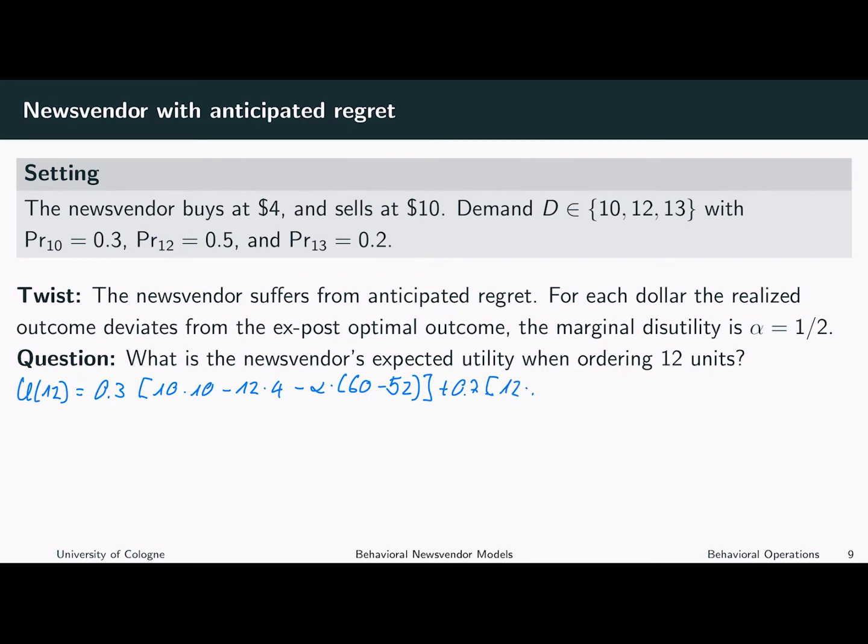In this case, the newsvendor sells 12 units at a price of 10, she bought 12 units at a price of 4, and there will be no leftovers. So the order decision was ex-post optimal, or put differently, the newsvendor does not observe that her decision was not ex-post optimal.